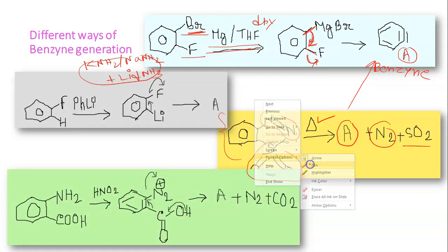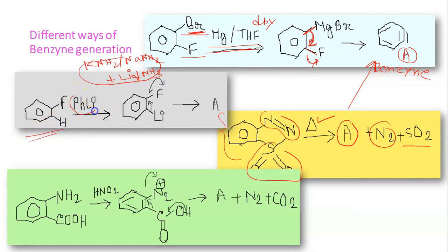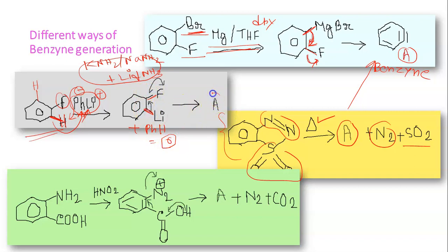Method 3: fluorobenzene treated with phenyllithium (PhLi) — lithiation occurs specifically at the ortho position activated by the fluorine. The Ph⁻ removes that ortho hydrogen; the C–F and C–Li bonds are then eliminated to give benzyne, with PhH (benzene) as a side product, along with LiF. Method 4: anthranilic acid (2-aminobenzoic acid, with –NH2 and –COOH groups) treated with nitrous acid (generated in situ from NaNO2 and acid) converts –NH2 to a diazonium ion (–N2⁺). N2 is an excellent leaving group, and decarboxylation of –COOH provides additional driving force, liberating N2 and CO2 as neutral gaseous molecules and generating benzyne.